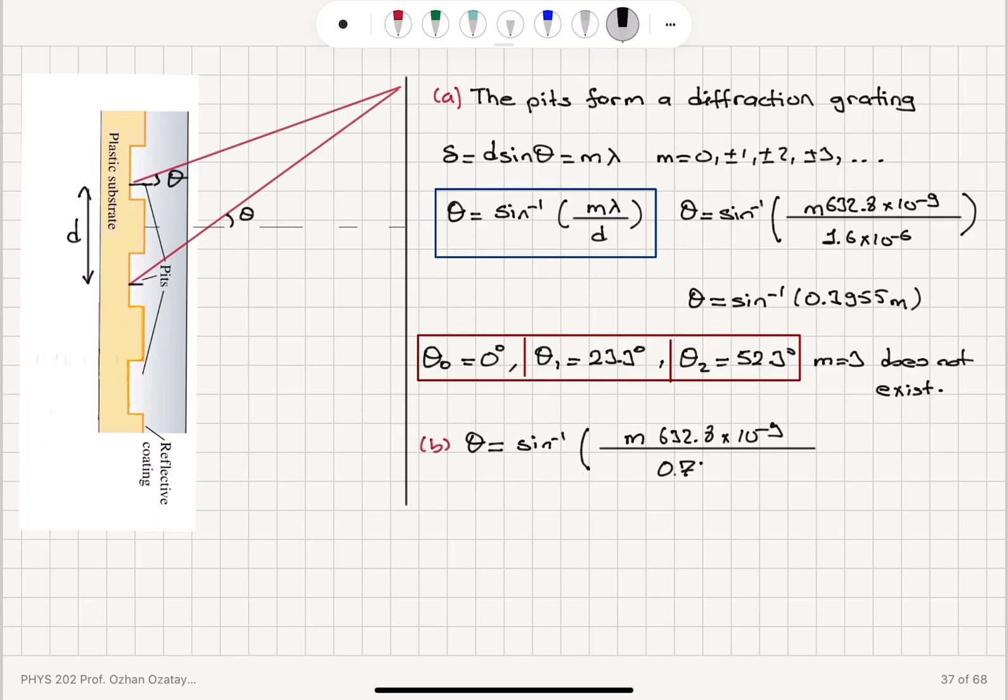The pit-to-pit separation is now 0.74 microns. So this gives us sin inverse of 0.855 M.